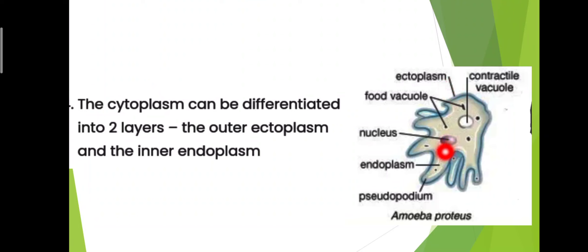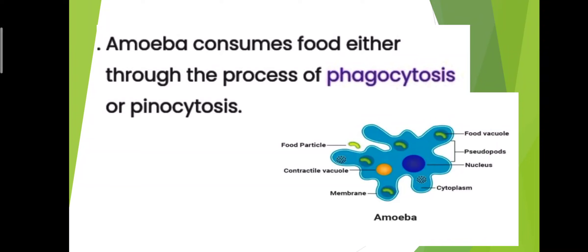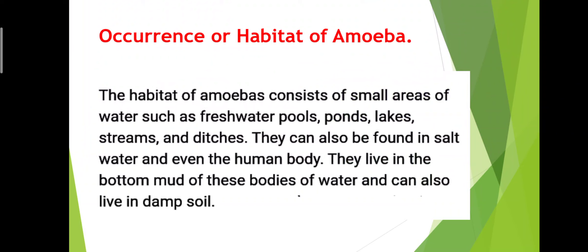Amoeba also contains other cellular organelles such as contractile vacuole, mitochondria, Golgi apparatus, and fat globules. Amoeba consumes food either through the process of phagocytosis or pinocytosis. The habitat of amoeba consists of small areas of water such as freshwater pools, ponds, lakes, streams, and ditches.